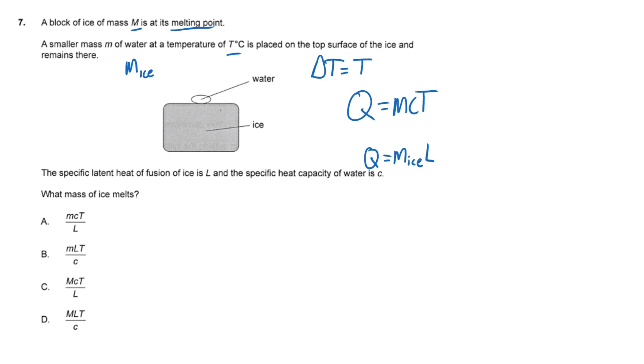And then by conservation of energy, all the heat from the water goes into melting the ice. So these two are equal to each other. We have the mass of the ice times the specific latent heat of fusion of the ice equal to mcT.